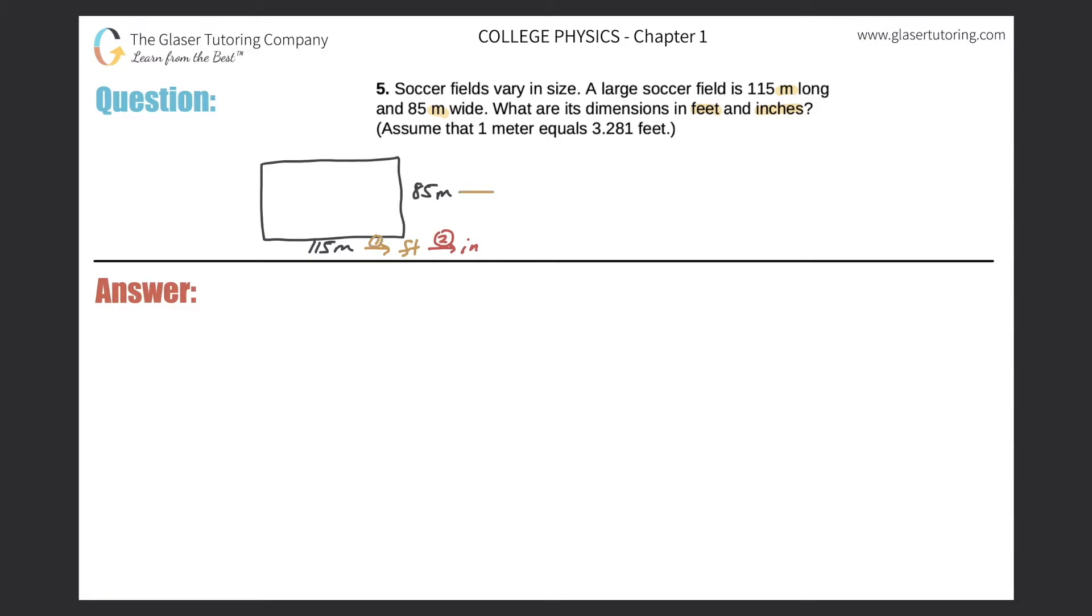We need to know the conversion factors. Fortunately they gave us one of them. It says that one meter equals 3.281 feet. So that's good. And there's one other one that we do need to know, and that's the amount of inches in a foot, right? So 12 inches is equal to one foot. Okay, so now we should have enough information to solve the problem.